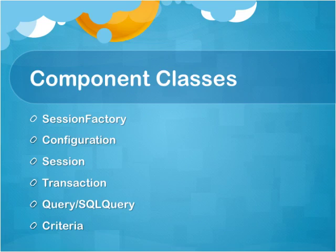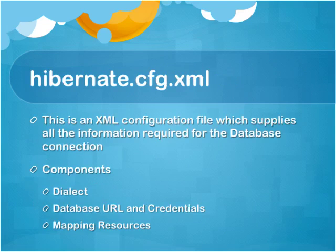Hibernate.cfg.xml is the default name given to the XML configuration file, which supplies all the information for the POJO class and relational database mapping. We can also give other names to this file — the configuration file does not have to be named that — but this is the default name. The XML configuration file usually contains the dialect, which basically tells us how to convert POJO class commands into SQL queries — whether for MySQL, Oracle, DB2, or whatever database we're using.